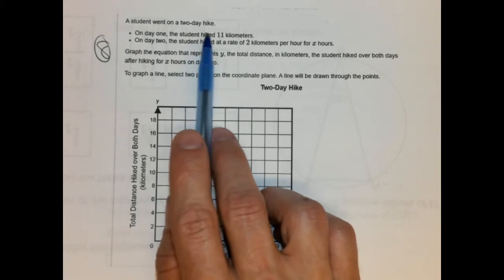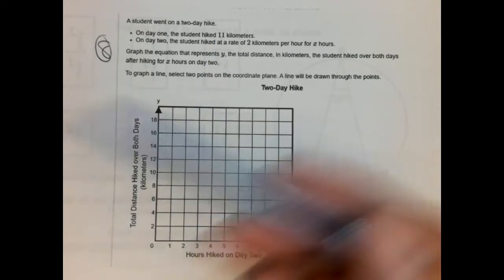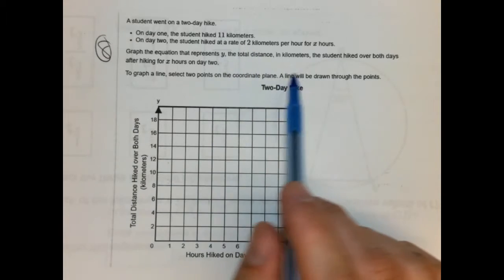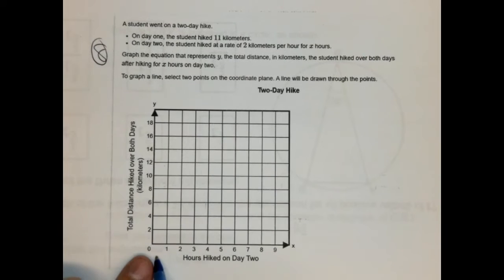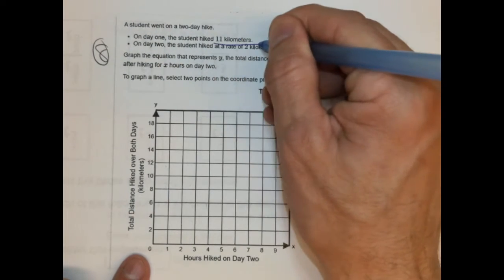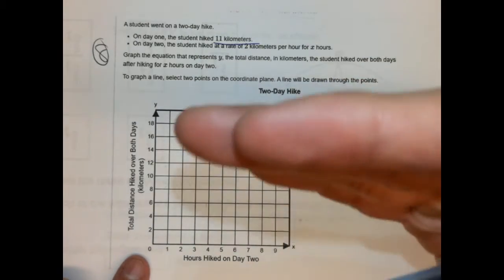On day one, this student goes 11 kilometers. Then after day one, they go at a steady rate of two kilometers per hour for X number of hours — and this is specifically the hours hiked on day two. Let's start with zero. At zero hours on day two, that means all of day one will have gone by. So at zero hours during day two, how many kilometers has this person hiked?